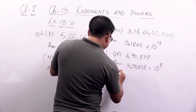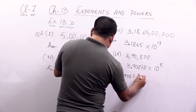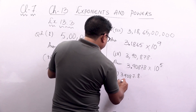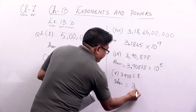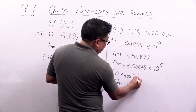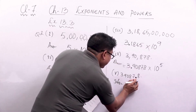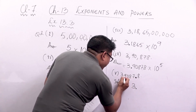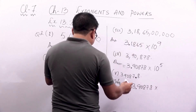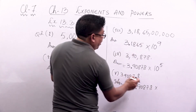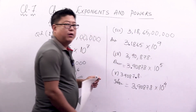Similarly for 53908.78: the decimal point is already here at 7.8. So we write 5 point 390878 into 10. We move the decimal point 4 places to the left — 1, 2, 3, 4 — so the answer is 5.390878 into 10 to the power 4.